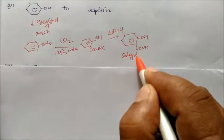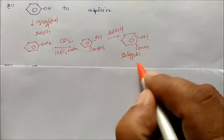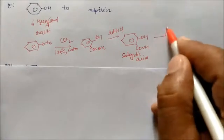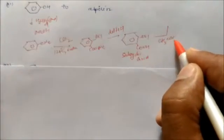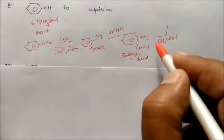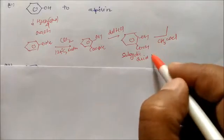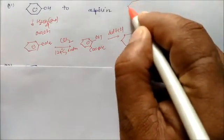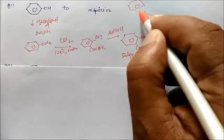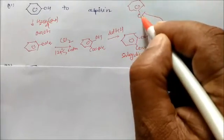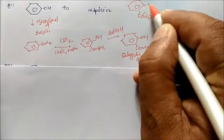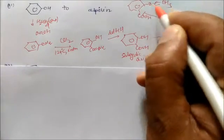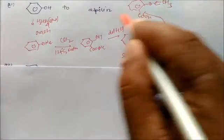To convert salicylic acid into aspirin, give CH3COCl. It reacts with the OH group, and you get aspirin: salicylic acid with COOH and OCOCH3 — the acetylated product.